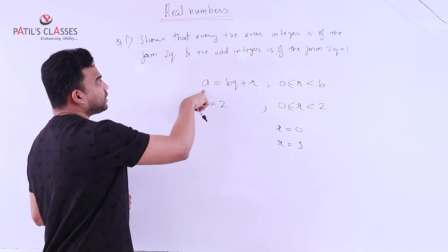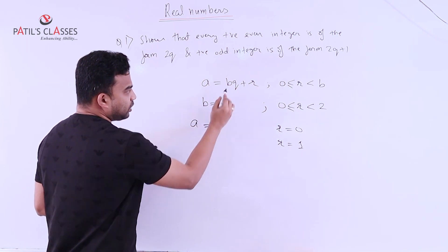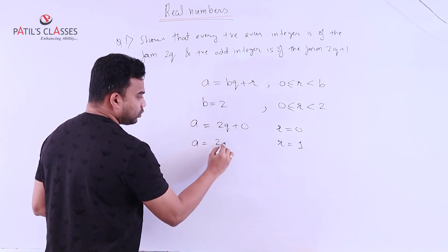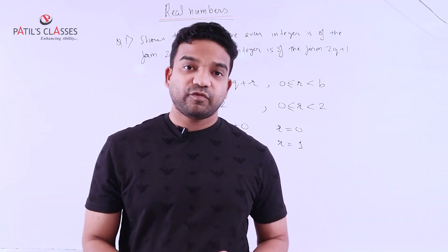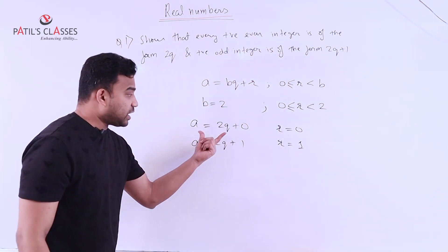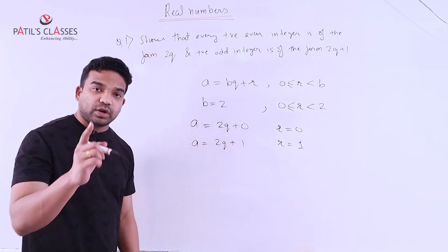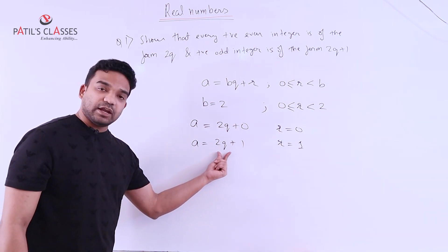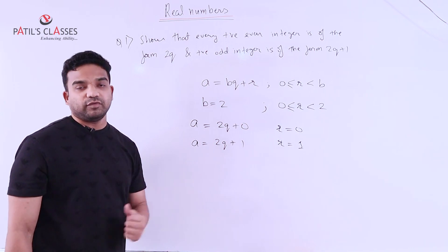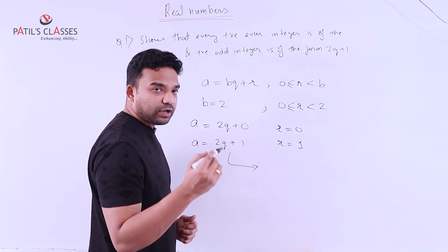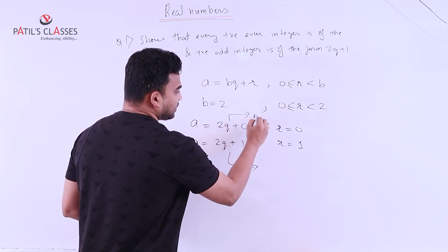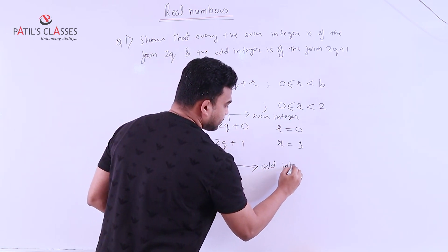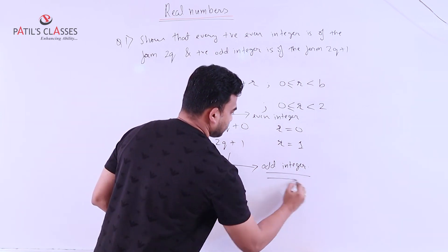We start substituting the values and we get A equal to 2q plus 0, that is 2q, and for the second case, A equal to 2q plus 1. Now for any integer q, I assure you that A equal to 2q plus 0 is going to give you an even integer, and for any value of q, 2q plus 1 is going to give you an odd integer. You can put any value of q and you will see that 2q gives you an even integer and 2q plus 1 gives you an odd integer. Hence proved.